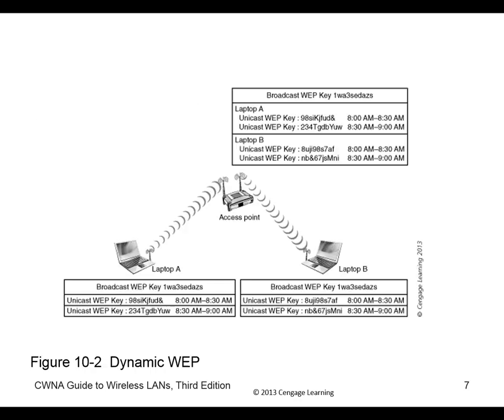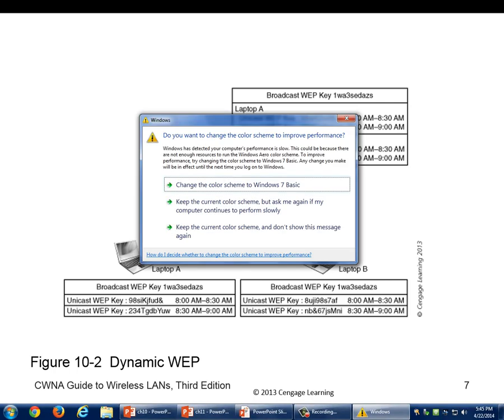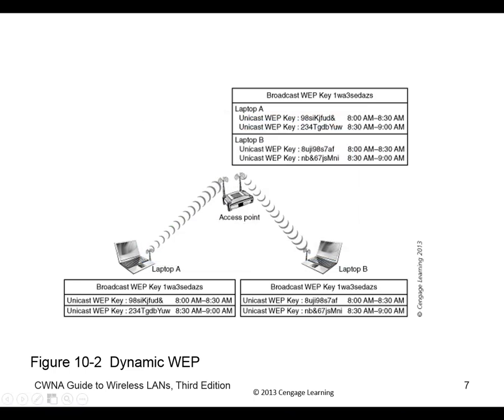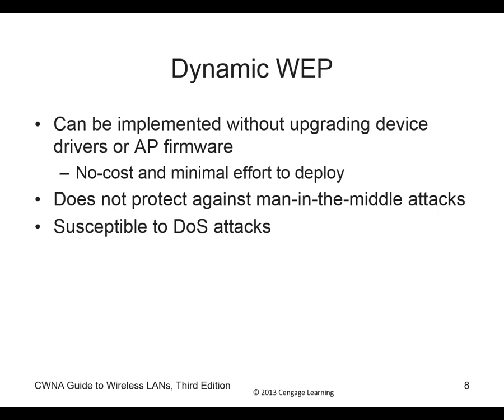Here's an illustration: Laptop A sends to the access point and back down to Laptop B. You have the key coming up to the 98, sent out, and the unicast key comes back down. Dynamic WEP can be implemented without upgrading the device or firmware. However, it does not protect against man-in-the-middle attacks and is susceptible to denial-of-service attacks and pings of death.